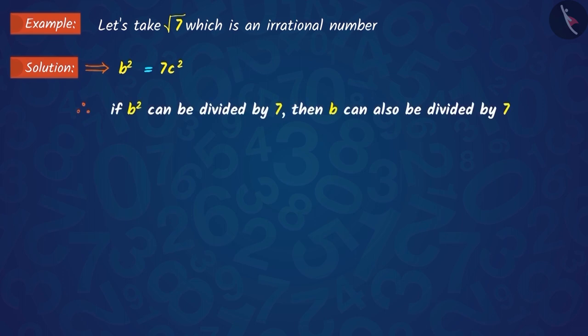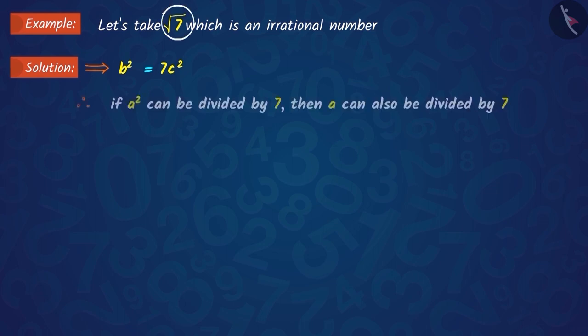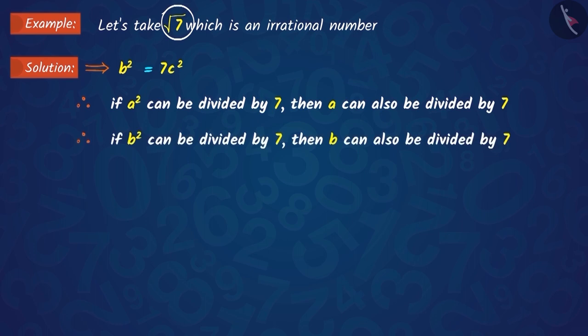This shows that 7 divides b². Then 7 will also divide b. According to the given irrational number √7, we get two results here. Thus, we know that a and b have at least one common factor and that the common factor is 7.